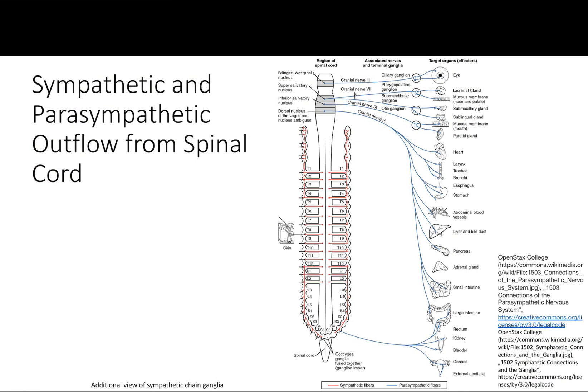Cranial nerve 7 and 9 were for the salivary glands, and cranial nerve 7 also did lacrimation. Then the big one is cranial nerve 10, which handled thoracic and abdominal viscera — so everything in the abdomen and thorax: heart, lungs, small bowel, adrenal glands, large intestine, and kidneys. Cranial nerve 10 innervates all of that.